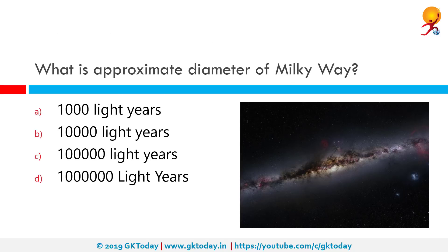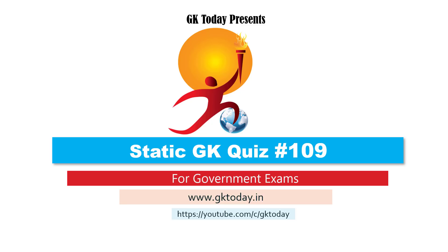The Milky Way is a barred spiral galaxy, approximately 1 million to 1.2 million light-years in diameter, containing 200 to 400 million stars. The correct answer for its approximate diameter is 1 million light-years.